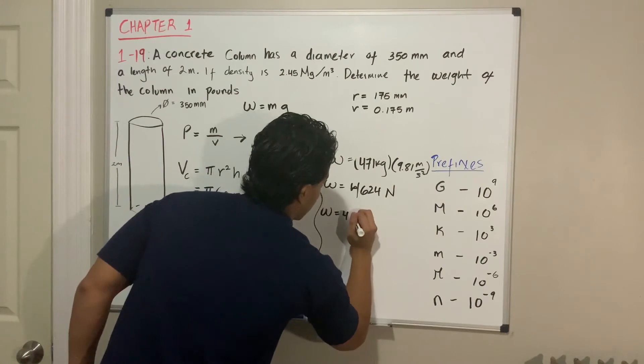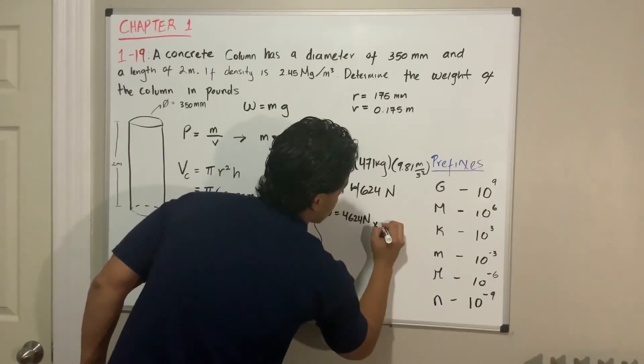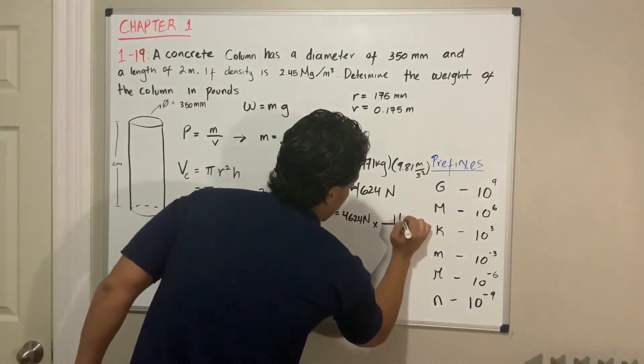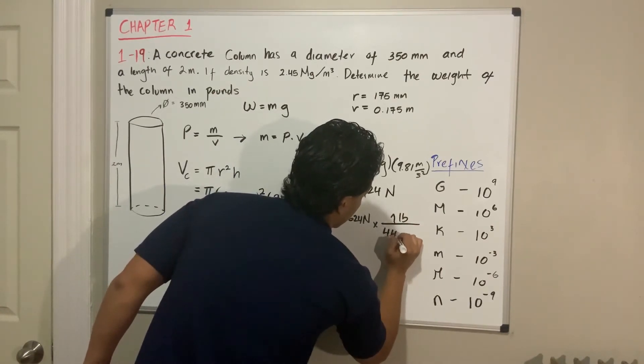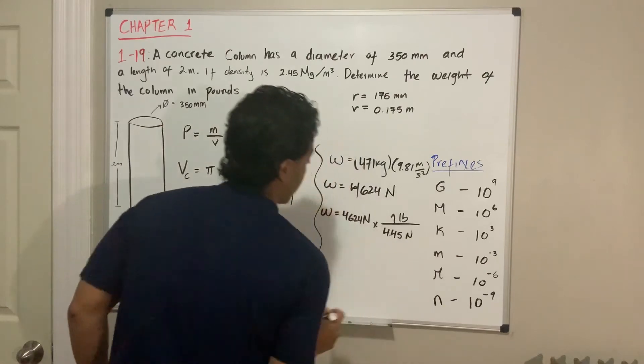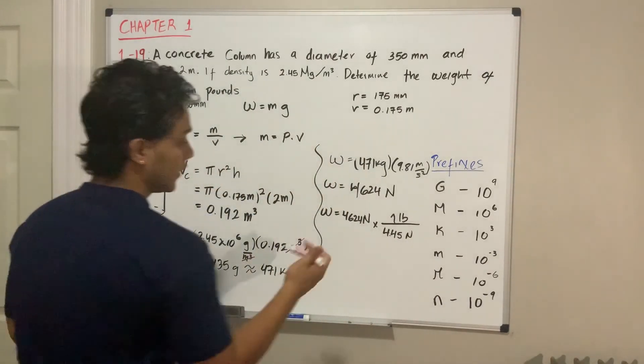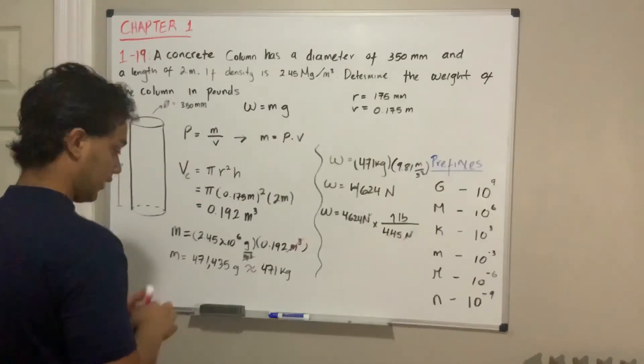We're gonna do 4624 newtons, and we're gonna use our conversion factor, which was that one pound is equal to 4.45 newtons. By using our conversion factor, the newtons cancel out and we're left with pounds.